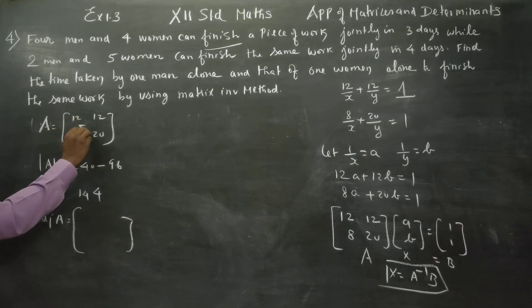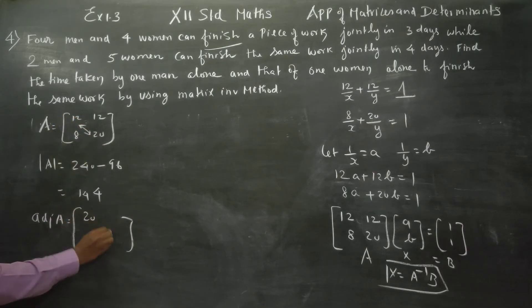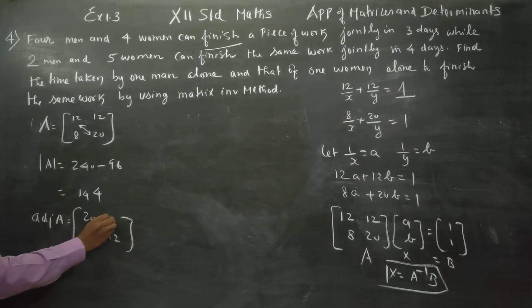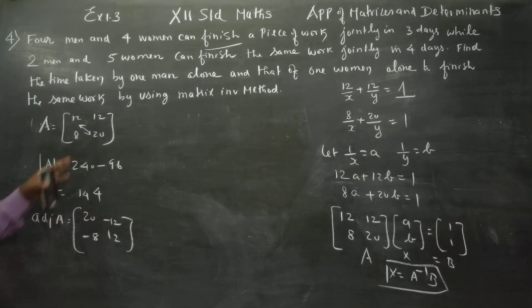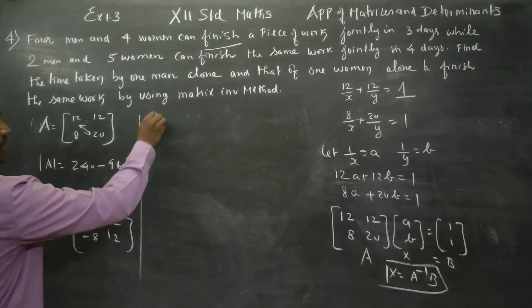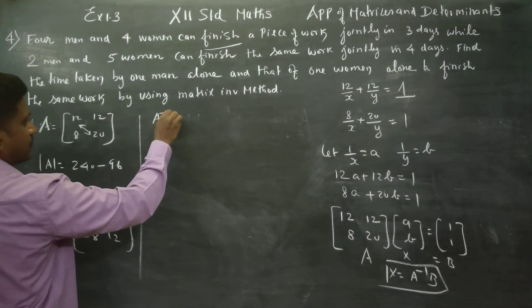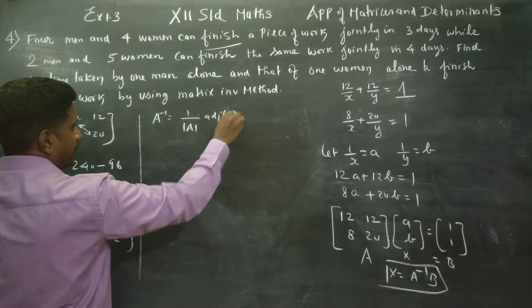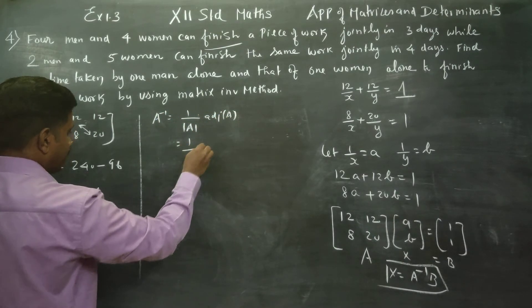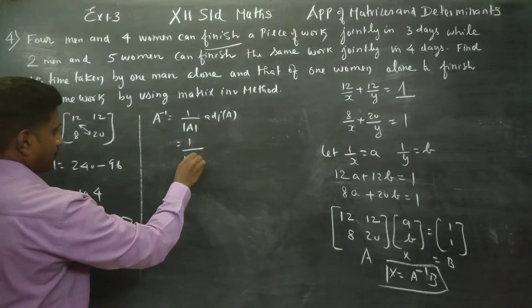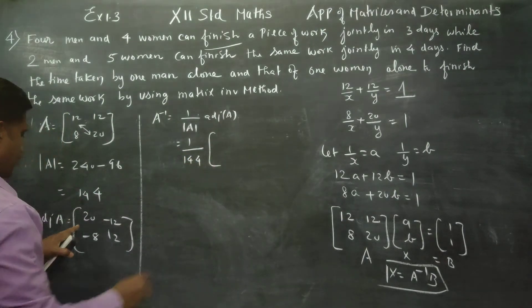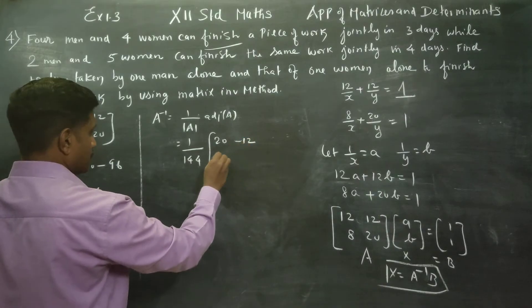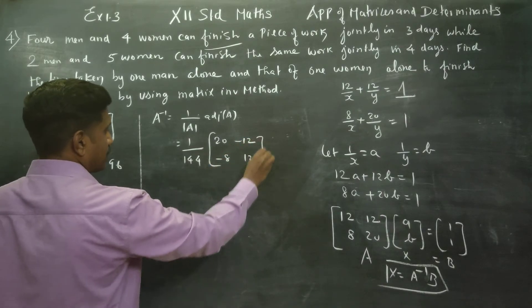A inverse equals 1 by determinant A into adjoint A. So A inverse equals 1 by 144 into the adjoint of A, which is the matrix: 20, minus 12, minus 8, 12.